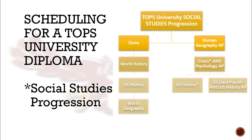Students on the AP track typically take Human Geography AP their 9th grade year, Civics and Psychology AP their 10th grade year, and then go on to take U.S. History, or U.S. History Pre-AP and U.S. History AP their junior year. It's important to note that only Psychology AP, not regular Psychology, counts towards the 4 Social Studies graduation requirements. Therefore, if students do not take Psychology AP, they will then take World History their senior year.